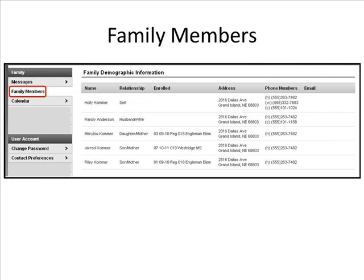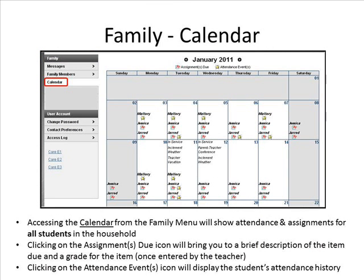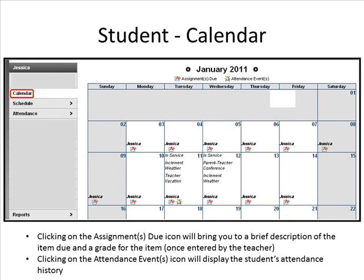Family Members displays a list of all household members and includes their relationship, address, phone number, and email address. Calendar lists the student's assignments and attendance. The calendar link beneath the family displays events for each enrolled student in the household. The calendar link beneath a particular student displays only the information for that student.